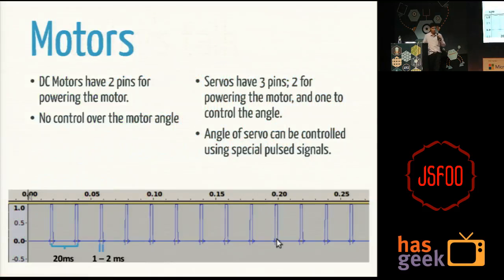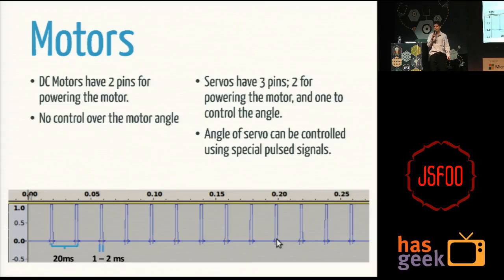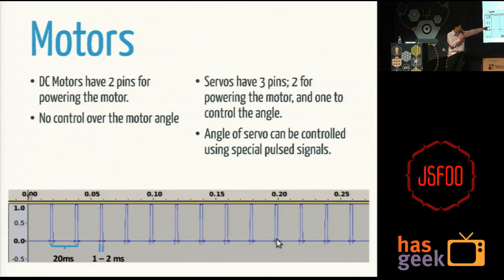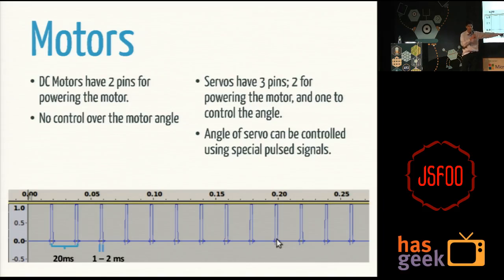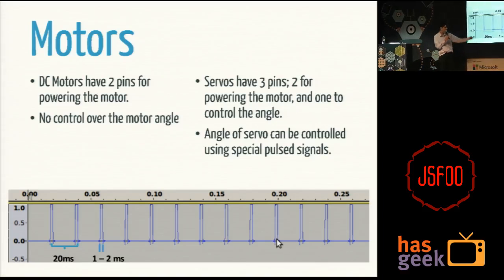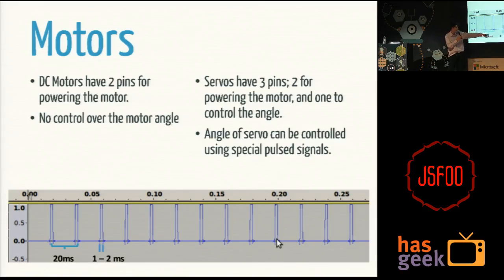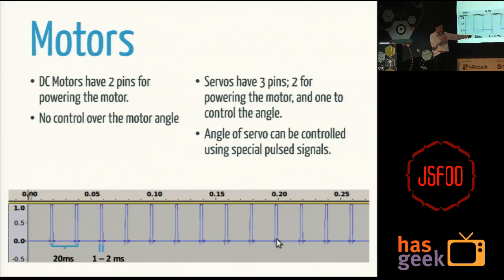The motors. There are a few basic kinds. Regular DC motors have two pins — you give it a DC voltage and it will run. Then there are servos. A servo is a special kind of motor where I can control the angle it goes to. I give it a signal with pulses every 20 milliseconds — so 50 times every second — with a pulse width of about 1 to 2 milliseconds. By varying this width between 1 millisecond and 2 milliseconds, I can control the angle. At 1 millisecond it goes to one extreme; at 2 milliseconds it goes to the other extreme.